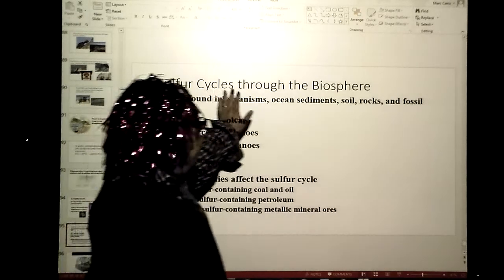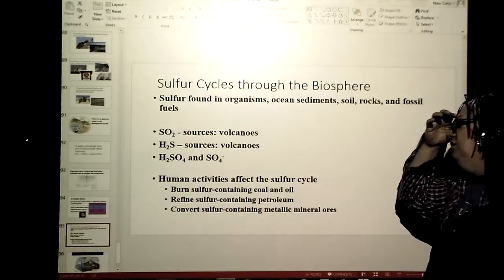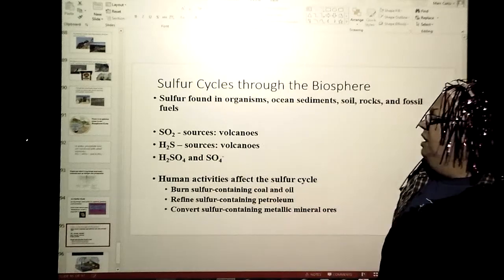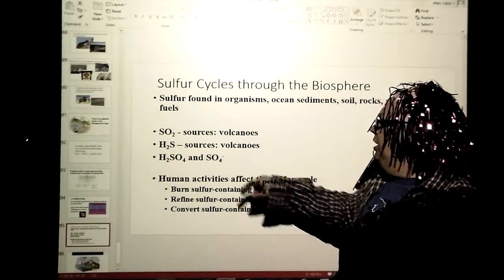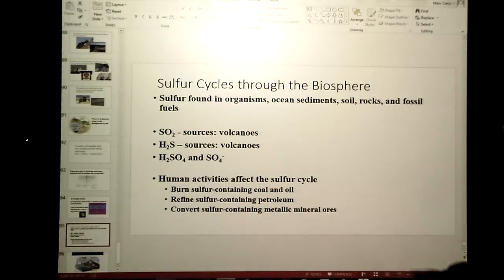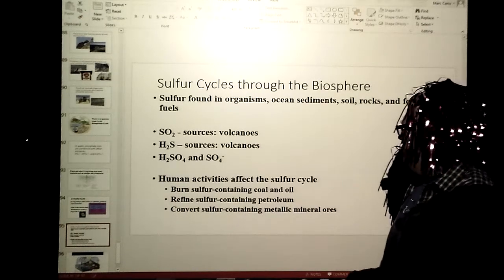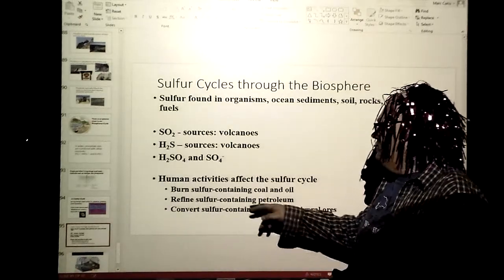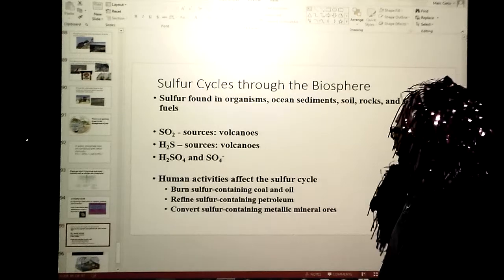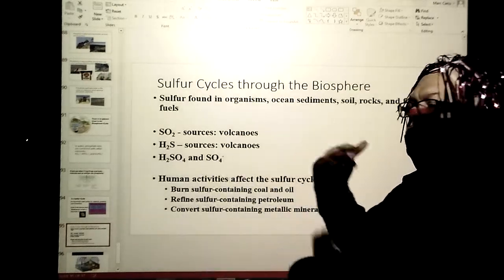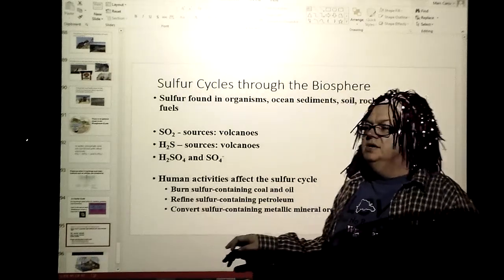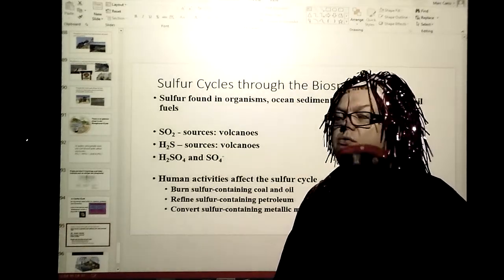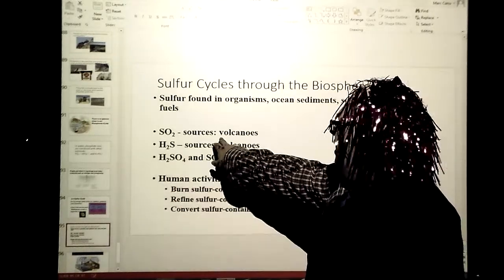We can find organisms in ocean sediments, soil, rocks, and fossil fuels. SO2 sources, for example, are volcanoes. H2S, dihydrogen sulfide sources - volcanoes. This is what gives the rotten eggs their smell. And H2SO4 and SO4- are forms of the sulfur in there. How do we affect the sulfur cycle? Burning sulfur-containing coal and oil, refine sulfur-containing petroleum, and convert sulfur-containing metallic mineral ores. We've had to actually put more sulfur into the system because of some of the stuff that we have been doing as a civilization. But I'm going to point something out - when volcanoes erupt, they put out a lot more sulfur than we do over a number of years.